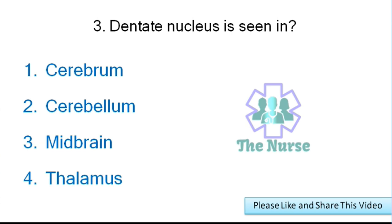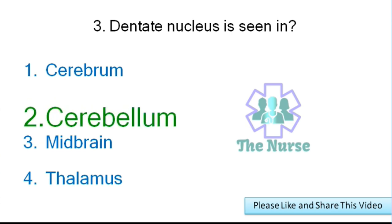Next question: Dendrite nucleus is seen in which brain region? Options: cerebrum, cerebellum, midbrain, or thalamus. Correct answer: cerebellum.